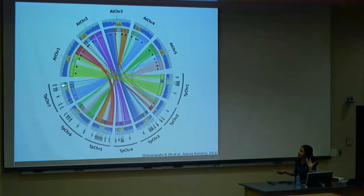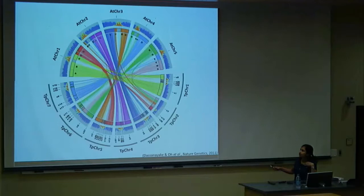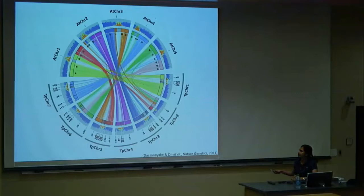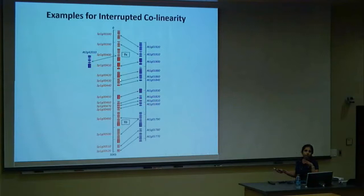Before looking for differences, we establish similarities. We aligned the Arabidopsis genome (chromosomes 1–5) to parvula chromosomes (1–7). The first thing you notice is lots of solid lines and large color blocks — these are similar regions between the genomes, called collinear or syntenic gene regions. These are highly collinear, highly syntenic genomes.